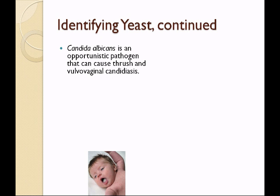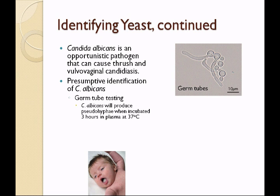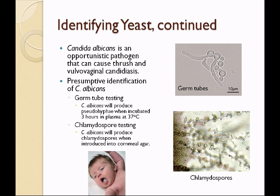Candida albicans is an opportunistic pathogen that can cause thrush and vulvovaginal candidiasis. One quick test to presumptively identify it is called the germ tube test. An inoculum of the suspected yeast is placed in plasma for three hours at 37 degrees Celsius, then a wet mount is observed under the microscope — we will see pseudohyphae extending from the yeast cells, called germ tubes. This is presumptively positive for Candida albicans. Candida albicans will also produce chlamydospores when introduced into cornmeal agar, which we'll be doing in this lab.